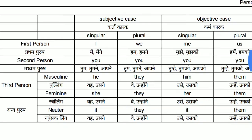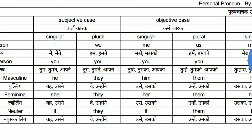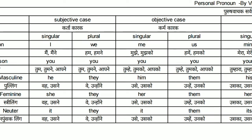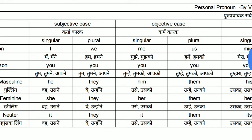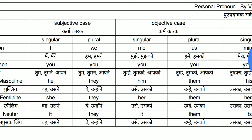Remember the objective case — Karmakarak. I becomes Me, and We becomes Us. You remains the same in both numbers. He becomes Him, and They becomes Them. She becomes Her, and It remains It. In objective case: Me — Mujhe, Ya Mujhko. The plural is Us — Humhe, Ya Humko. Similarly, the plural of Him, Her, and It is Them — Unhe, Ya Unko.